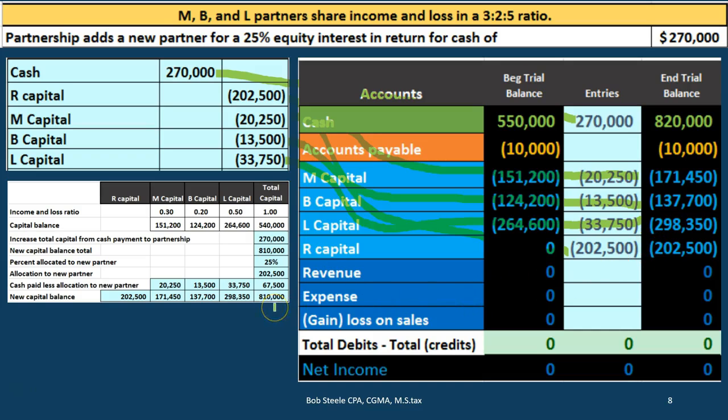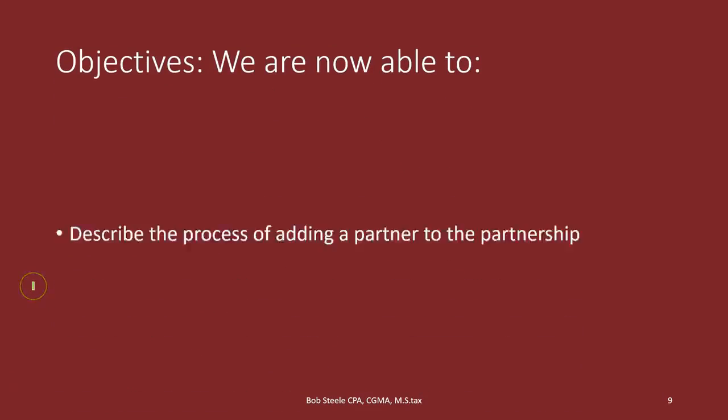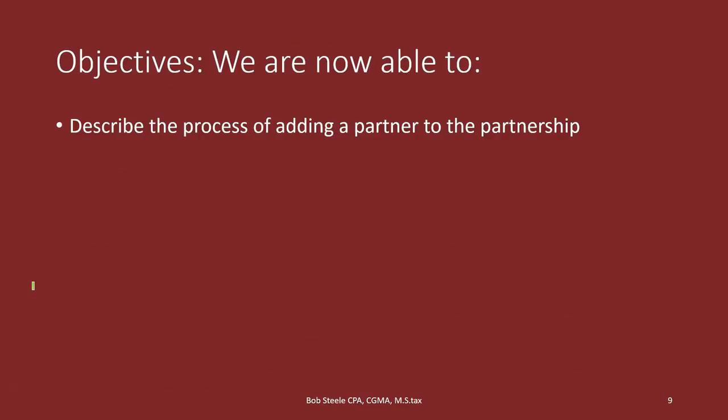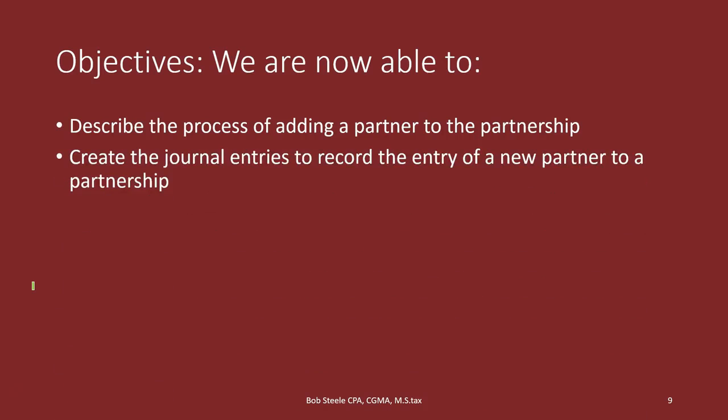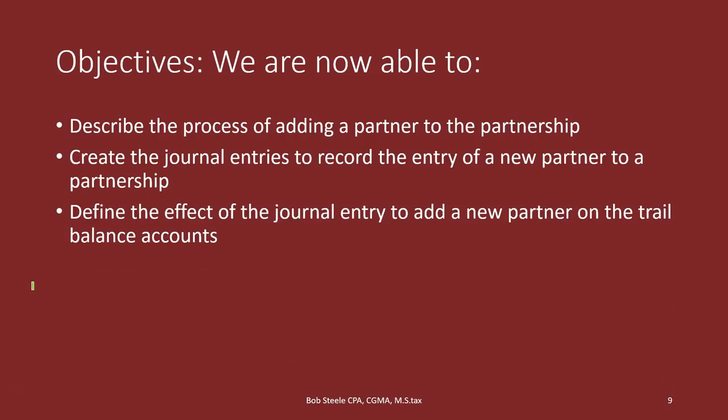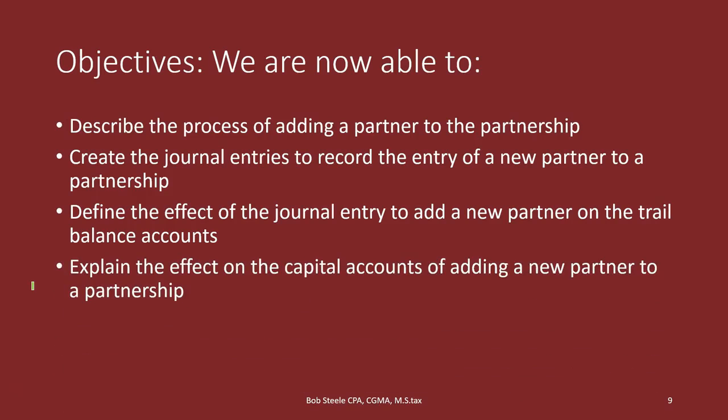We are now able to describe the process of adding a new partner to a partnership, create the journal entries to record the entry of a new partner, define the effect of a journal entry to add a new partner on the trial balance accounts, and explain the effect on capital accounts of adding a new partner to a partnership.